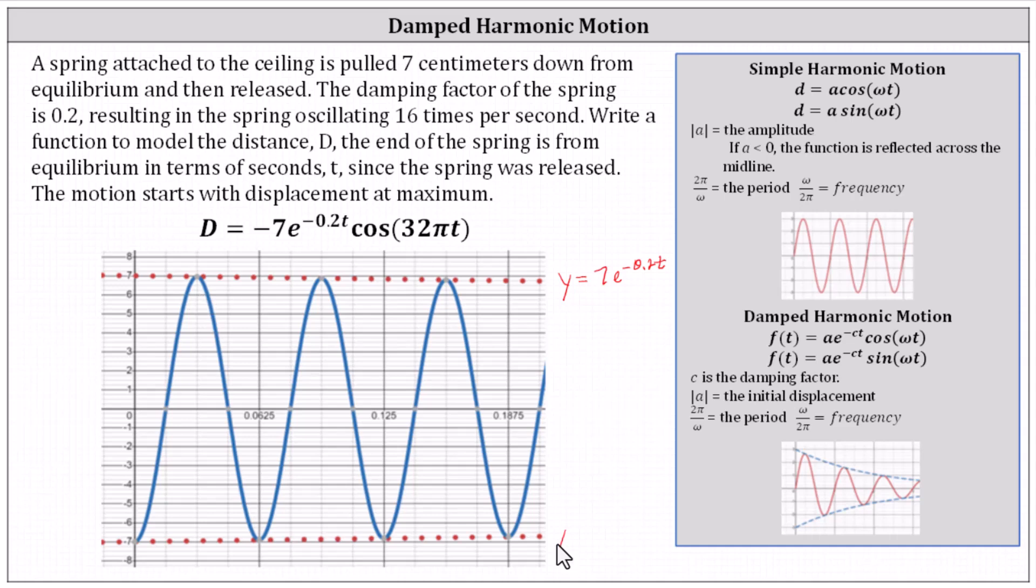And below we have y equals negative 7 e to the power of negative 0.2t. Notice all of the relative minimums appear as points on this curve. I hope you found this helpful.